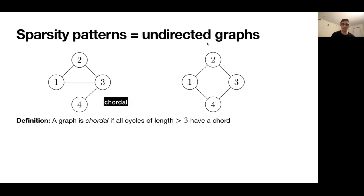We call a graph chordal if all cycles of length greater than three have a chord. So for example, this graph on the left is chordal because there are no cycles of length greater than three. However, the graph on the right isn't chordal because it has a cycle of length four and there's no chord in it, a chord being an edge between non-adjacent vertices.